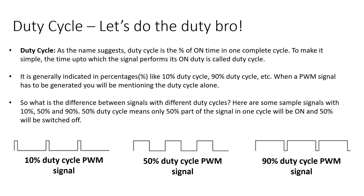First, let's understand duty cycle. Duty cycle is nothing but the percentage of the ON time in one complete cycle. There is a signal, and the signal is on for a certain amount of time. If I can specify that amount of time in percentage, I call it duty cycle. It is generally mentioned in percentage, like 10%, 20%, 50%, 90%, and so on.